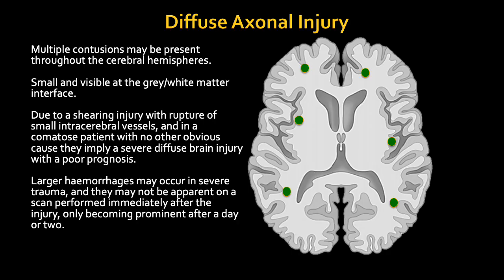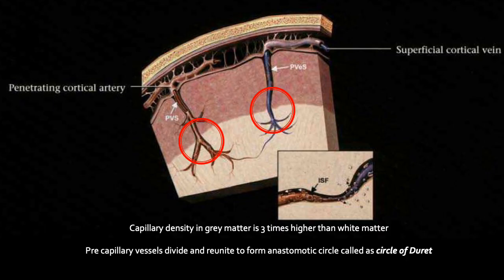Now let's look at intracranial or intraparenchymal hemorrhage. Diffuse axonal injury tends to occur at the grey-white matter junction because grey matter is four times more dense than white matter. When energy is applied through two different tissue densities, the differentiation in expansion and contraction causes tearing at this junction. Additionally, superficial cortical veins and arteries pass through both grey and white matter and have an area of anastomosis — tearing occurs at these points of density difference.